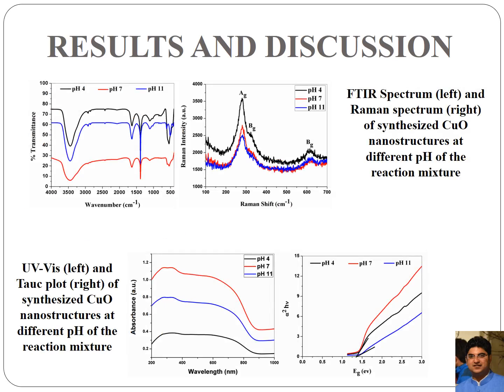Next the FTIR and Raman spectroscopy of the synthesized nanostructures was carried out. Looking at the FTIR plot, around 3500 cm⁻¹ broad peaks are obtained. These peaks are attributed to the presence of OH groups which might be due to the presence of residual moisture in the sample. Going towards lower wave numbers, close to 500 to 700 cm⁻¹, we have some peaks that correspond to the metal-oxygen stretching, confirming the presence of copper oxide in the sample.